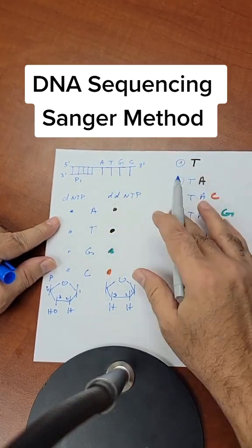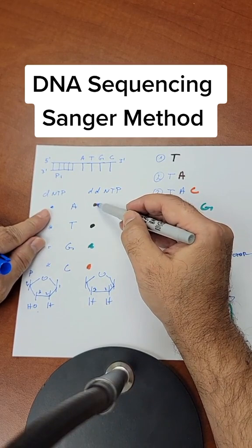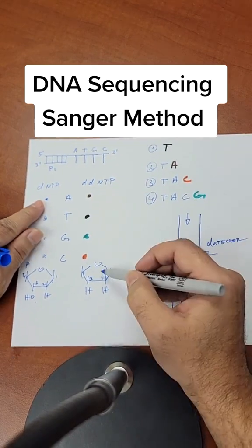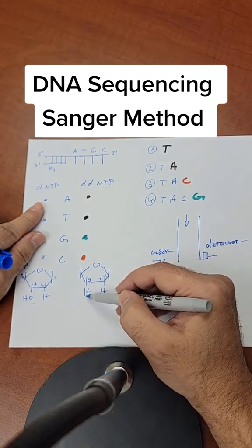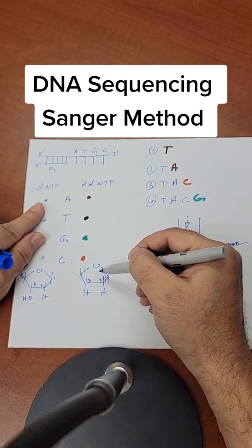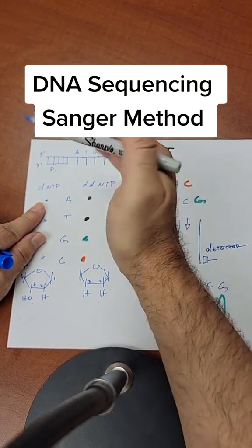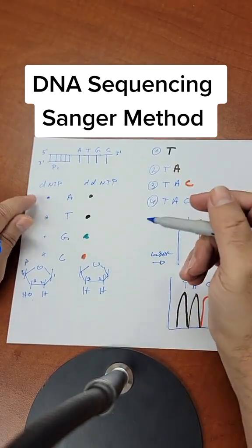The other DNTPs are a fluorophore type. They have different colors, and they don't have the OH group on the third position. So when this gets incorporated into the chain, it's going to terminate, and the product is going to fall off.